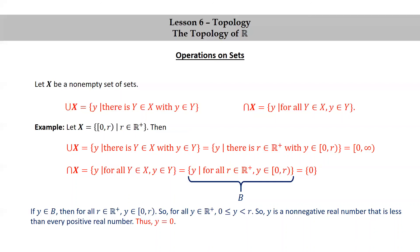Let y be in B. Then for every positive real number R, y is in 0 to R, so y is between 0 and R for every positive real number R. In other words, y is a non-negative real number that is less than every positive real number, so y has to be zero. Since y in B was arbitrary, we have shown that B is a subset of the set consisting of just zero.